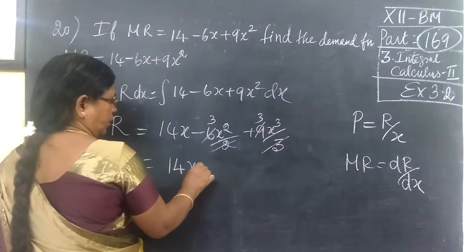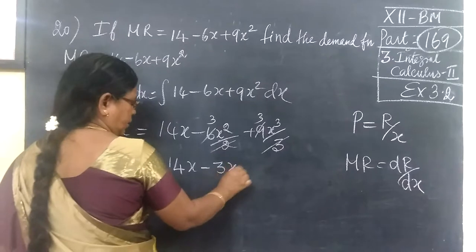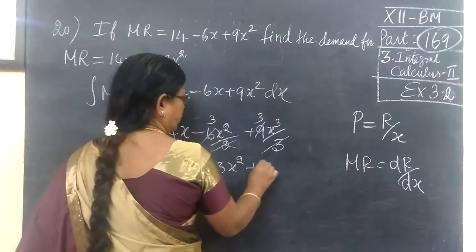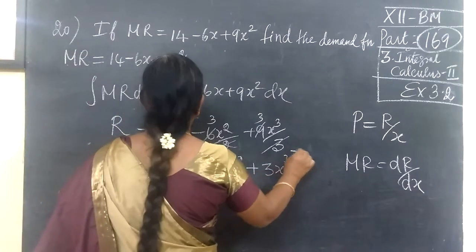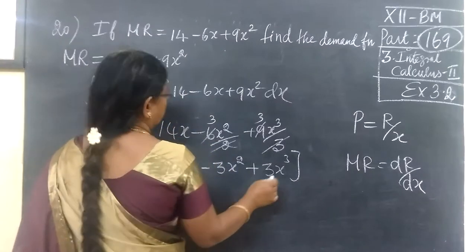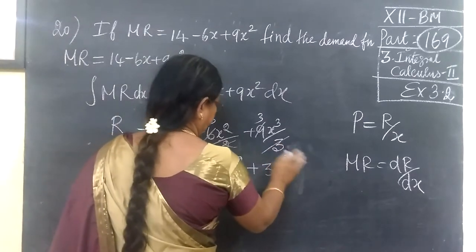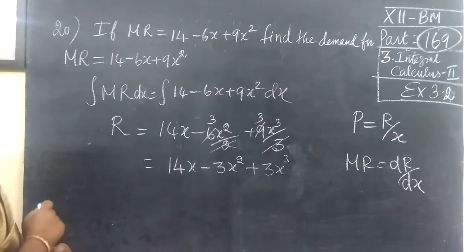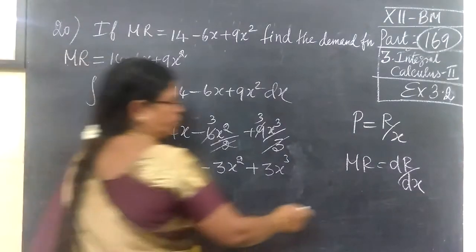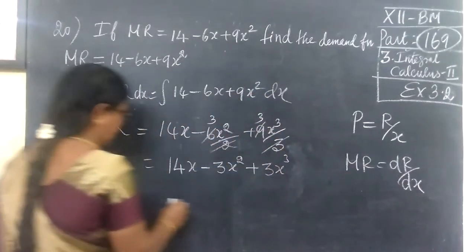This is equal to 14x minus 3x squared plus 3x cubed. So demand function is equal to R by x.